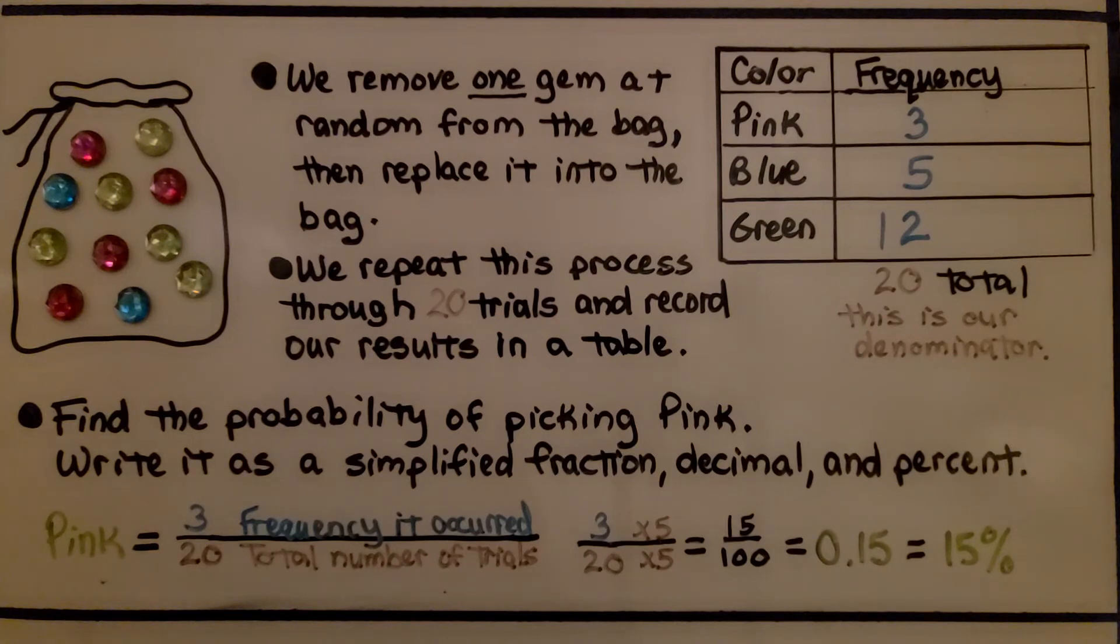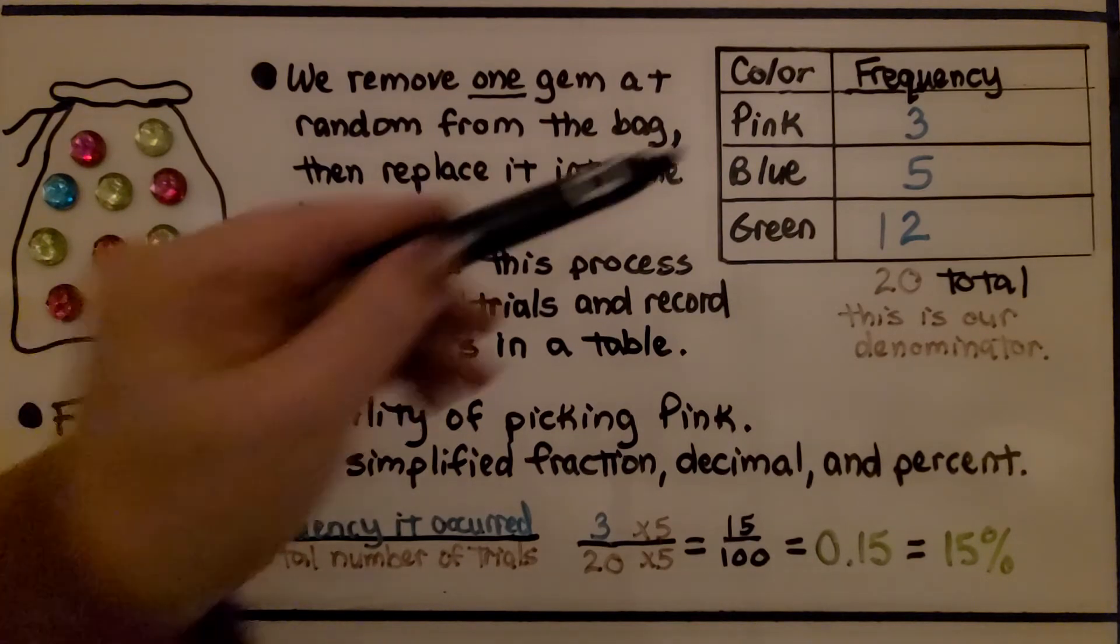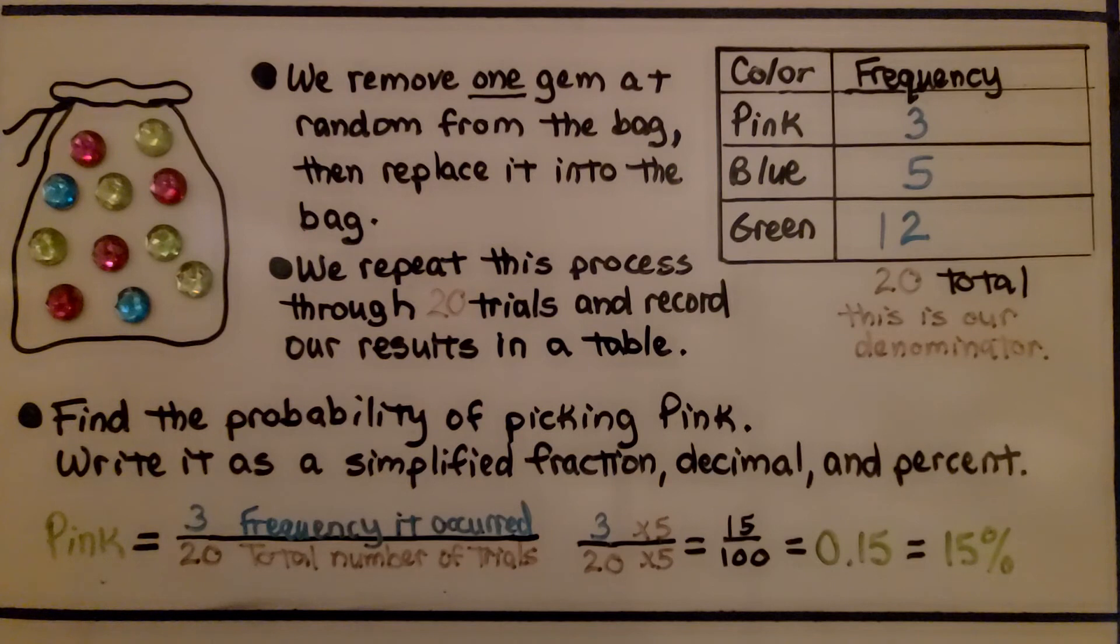So find the probability of picking pink. We write it as a simplified fraction, decimal, and percent. So the experimental probability of picking pink is three-twentieths. It's three is the frequency it occurred, and twenty is the total number of trials. And three-twentieths is fifteen-hundredths, which is fifteen-hundredths as a decimal, and fifteen percent as a percent.